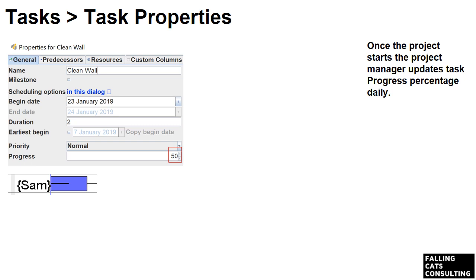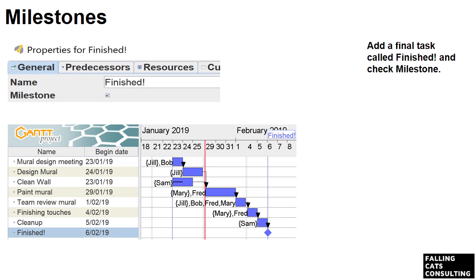Once the project starts, the project manager needs to update the task progress percentage daily after consulting with the resources working on each task. In this case, we've done 50% of the wall cleaning — see how the Gantt chart shows this as a horizontal line. Obviously, if we're at the end of the planned task but it's not finished, it's time to start juggling or managing expectations. If we're lucky enough to finish early, we can also see if we can start other tasks earlier. A milestone is a way of signalling the end of a phase of a project. Add a final task called 'Finished' and check milestone, make the predecessor the cleanup task. See how it's shown on the Gantt chart as a diamond. The first task in the next phase would be dependent on that milestone.